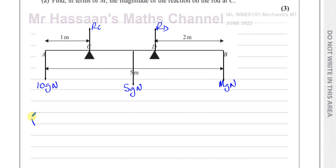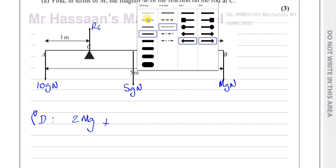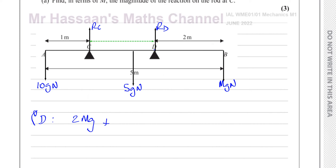Taking moments about D: it's in equilibrium so clockwise and anticlockwise moments are equal. The clockwise moments include the force MG at B, which is 2 metres from D, giving 2MG. We also have RC acting upward at C. The total length is 5 metres: DB is 2 metres, DC is 3 metres (1 metre from C to A, plus 2 metres), so the distance from C to D is 2 metres, giving a moment of 2 times RC.